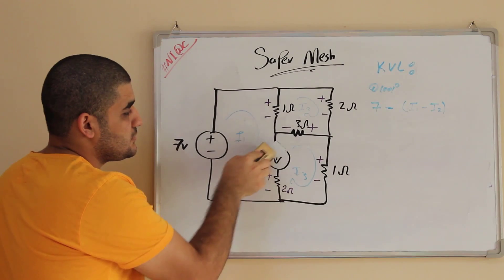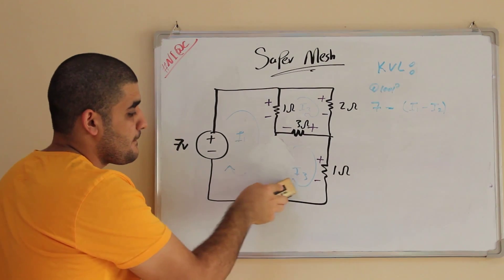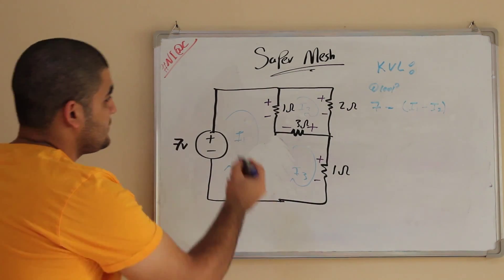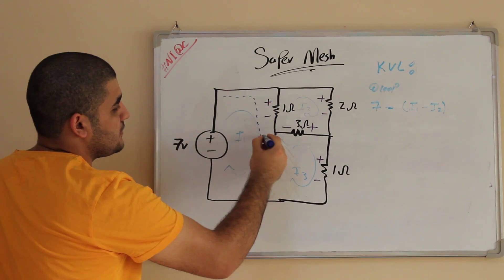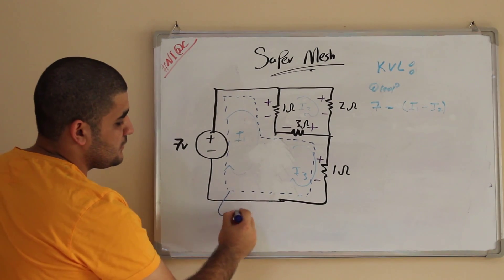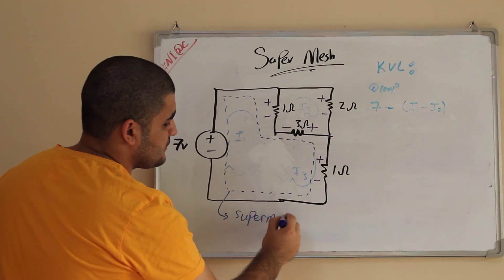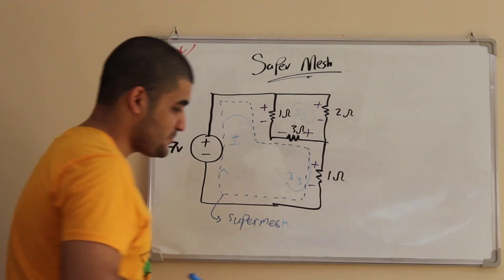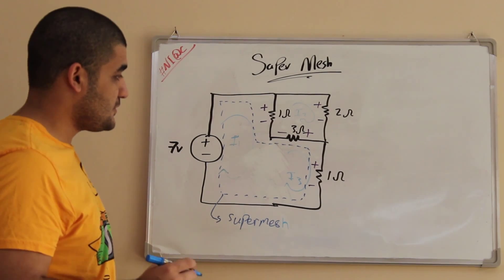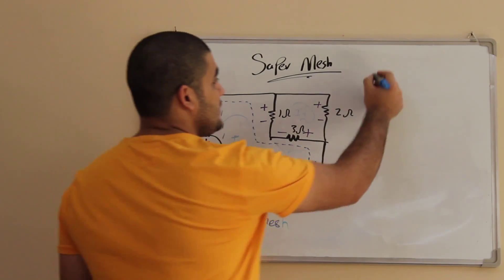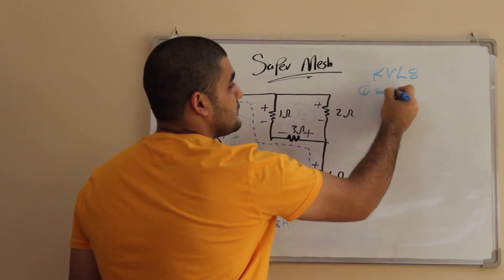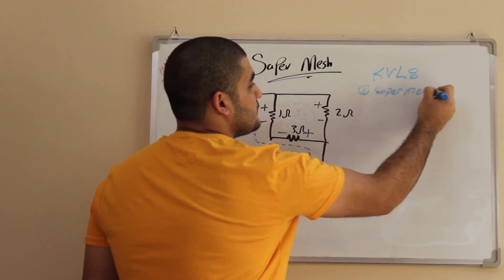What am I going to do? You have to remove this branch. When you remove this branch, you have something called super mesh. So now we're going to write the KVL equations for the super mesh.